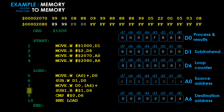Instruction 8 decrements the loop counter D6 to 0. Instruction 9 compares D6 with 0 — since D6 equals 0, the Z flag is set to 1. When instruction 10 (BNE) executes, it sees that D6 is 0 by checking the Z flag, so the program does not branch. It continues to the next instruction and the program simply ends. This is how the memory-to-memory program works.